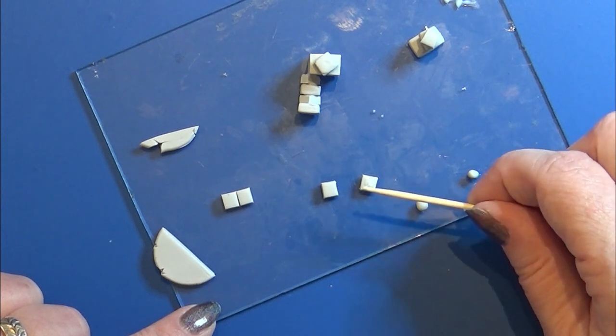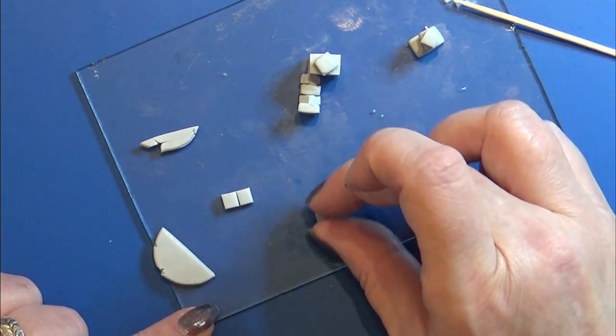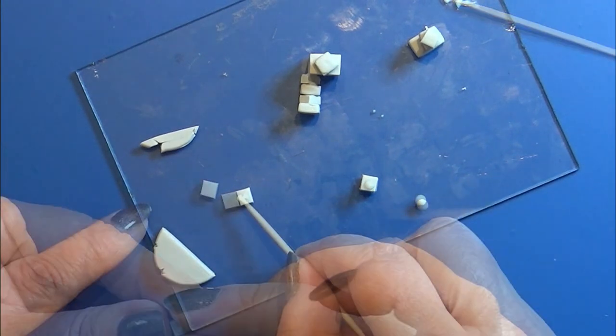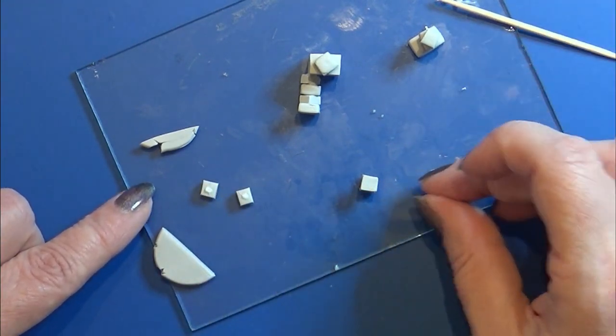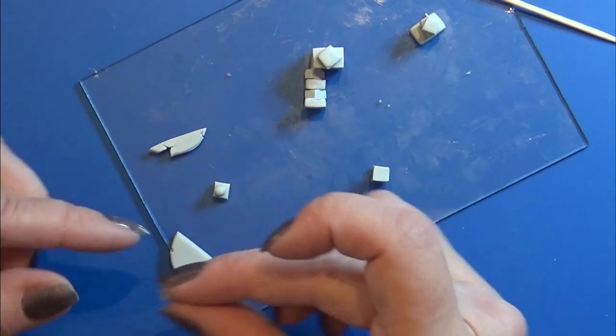I'm using bacon bond and I'm sandwiching one of the small balls between two of these squares. So I end up with two pieces with a square on top, a ball in the middle, and a square on the bottom.